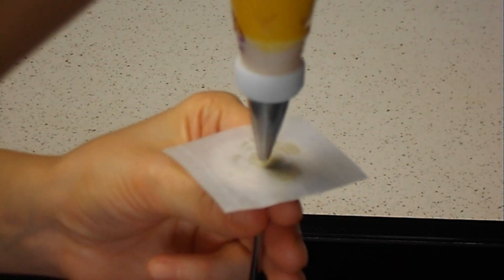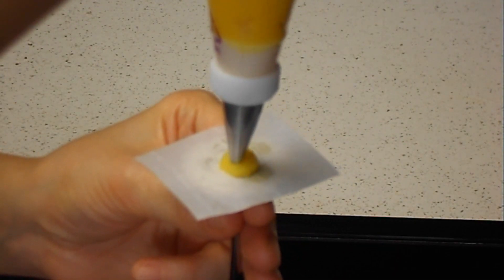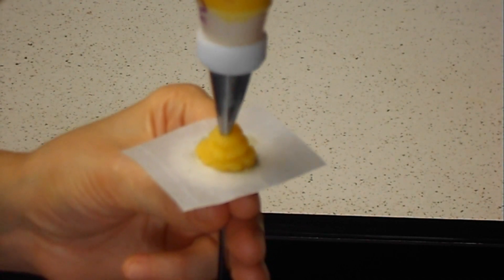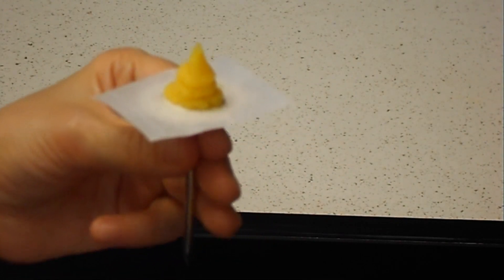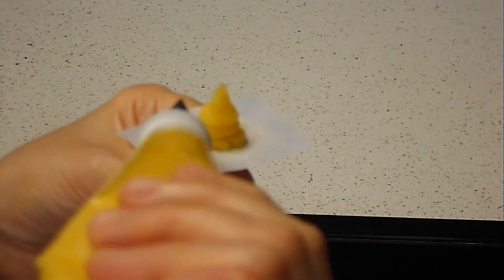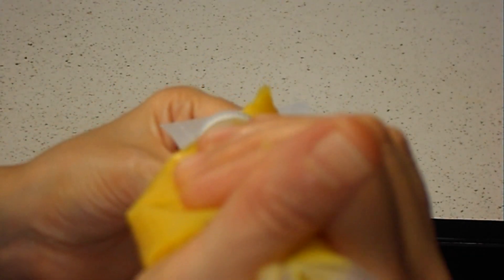For the first one you could use a round tip or I'm just going to use the same one. For the first one you just make it like this. And then we are going to pipe like a regular rose.